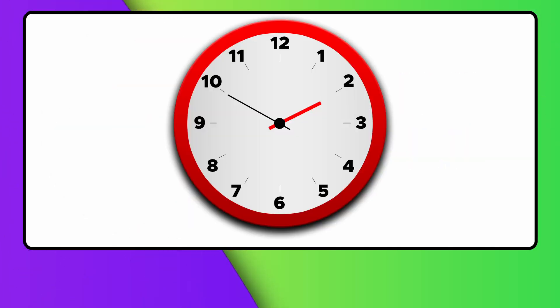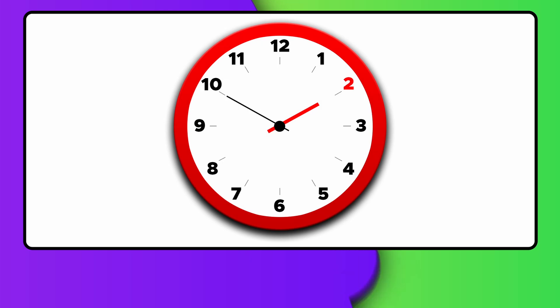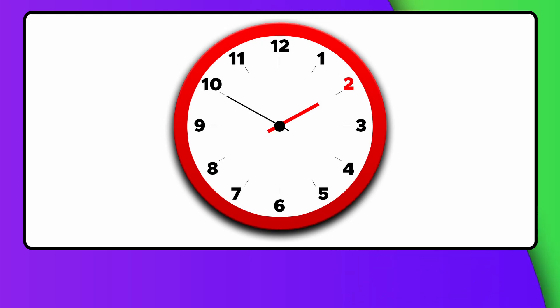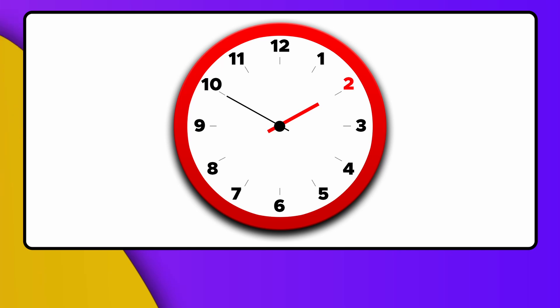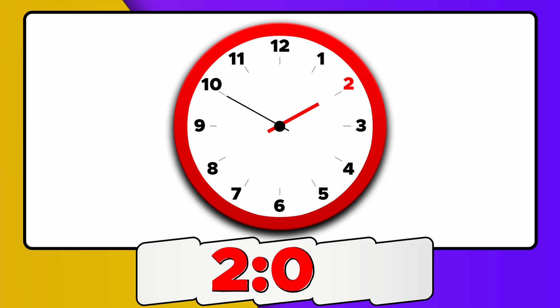Let's start by looking at the short hand. It points to the number of the hour. So if the shorter hand is pointing to the number 2, that means that it's 2 o'clock.